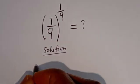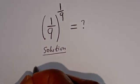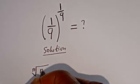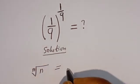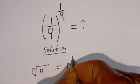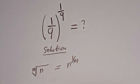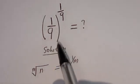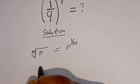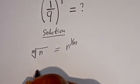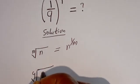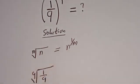Take note that if you have the m-th root of n, this is equal to n to the power of 1 over m. Then this expression can be written as the 9th root of 1 over 9.